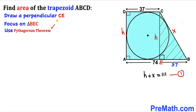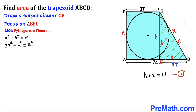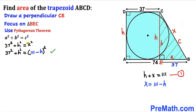Using the Pythagorean theorem A² plus B² equals C², with EB as one leg (37), H as the other leg, and BC (which is x) as the hypotenuse: 37² plus H² equals x². From equation 1, moving H to the other side gives x equals 111 minus H. Substituting this into our Pythagorean equation, we replace x with 111 minus H, as shown in the next step.